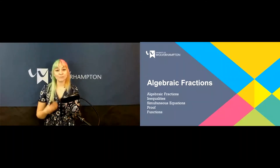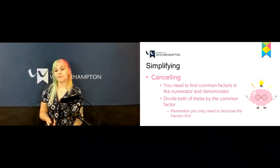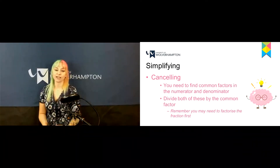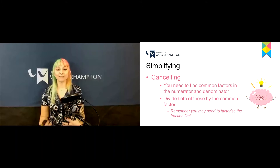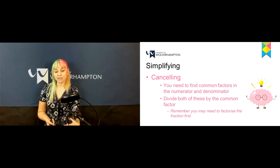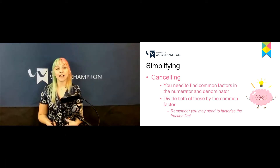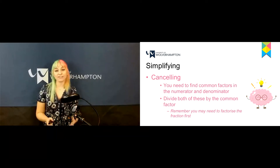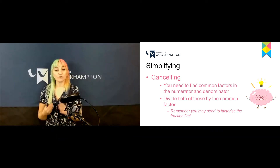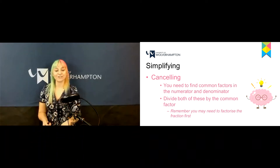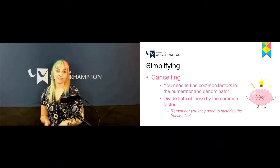We're going to begin with algebraic fractions, and the first section we're going to tackle is simplifying. To simplify, you simply cancel the fraction by finding the common factor in the numerator — the number at the top of the fraction — and also the denominator — the number at the bottom — and you divide by that common factor. Remember you may need to factorize the fraction first, as we discussed in the first algebra session.